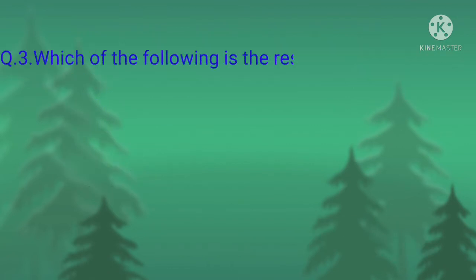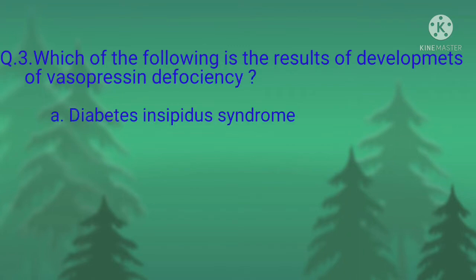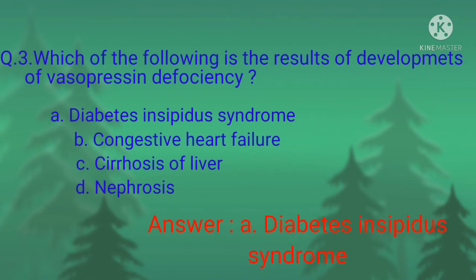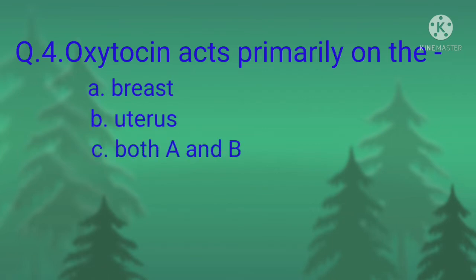Question number three: which of the following is the result of development of vasopressin deficiency? Option A, diabetes insipidus syndrome; option B, congestive heart failure; option C, cirrhosis of liver; option D, nephrosis. The correct option is option A, diabetes insipidus syndrome.